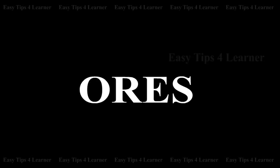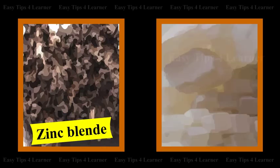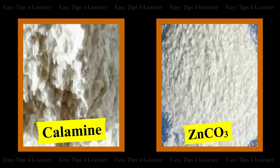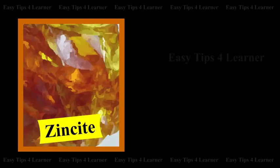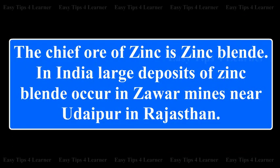The important ores of zinc are: Zinc Blende (ZnS), Calamine (ZnCO3), and Zinc Oxide (ZnO). The chief ore of zinc is zinc blende.